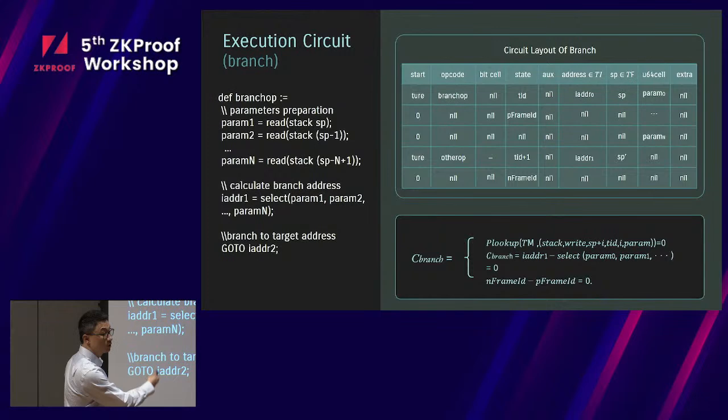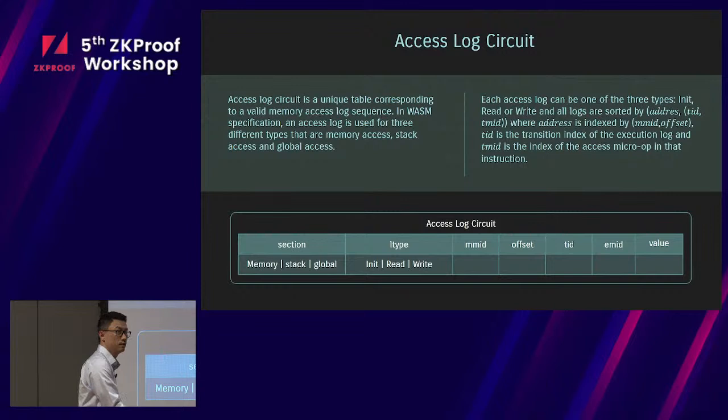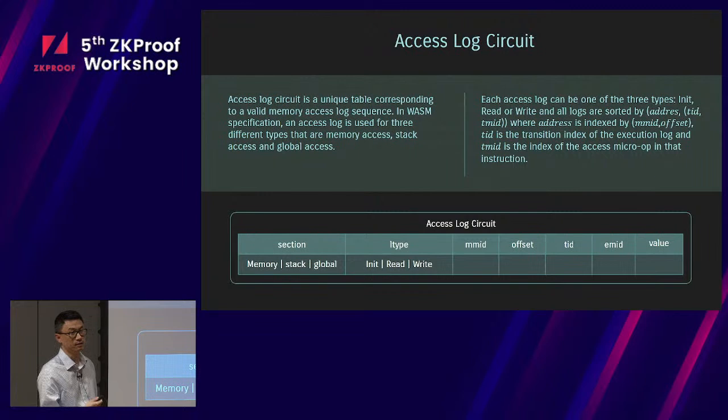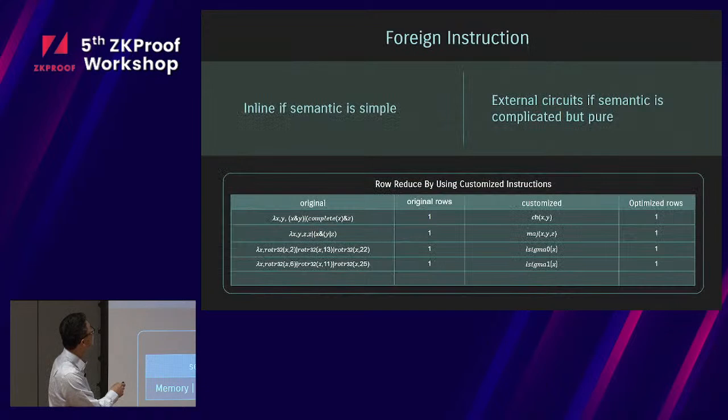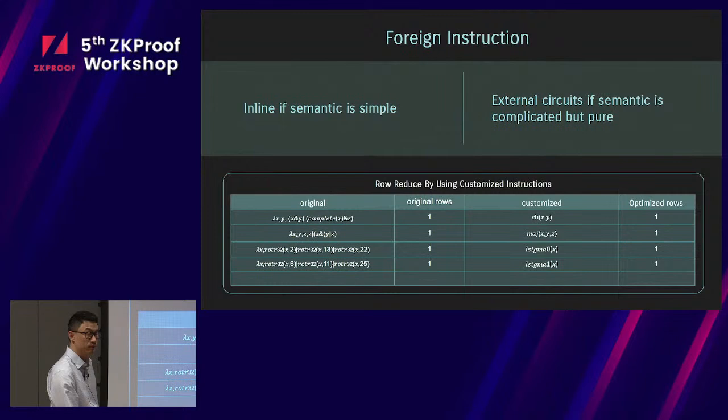The access log circuit is a standard read-write table. Every time you're sorting the access address and then make sure that every time the read instruction gets the closest write instruction value from the access log circuit. The foreign instructions exist because if you have some kind of instruction that does not need the range check or does not do a lot of bitwise stuff, and the semantics of the small blocks of instruction is simple enough, you can implement foreign circuits and foreign instruction and inject that into the WebAssembly interpreter. For example, instead of writing a state-of-art SHA-256, we're just implementing this customized very simple foreign instructions and inject that into the implementation of SHA-256. It's not as quick as state-of-art SHA-256, but it actually turns out not bad.